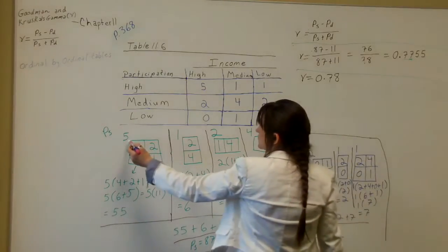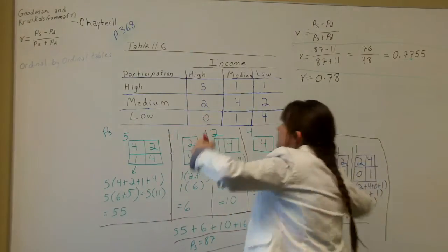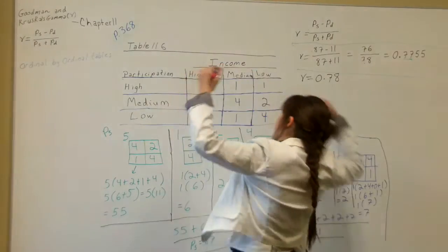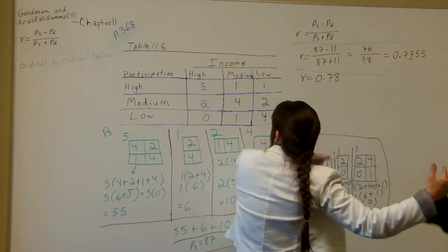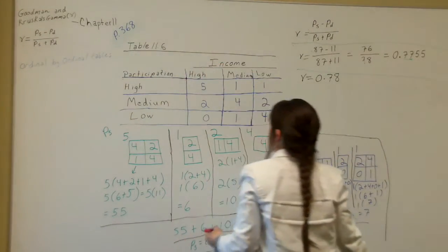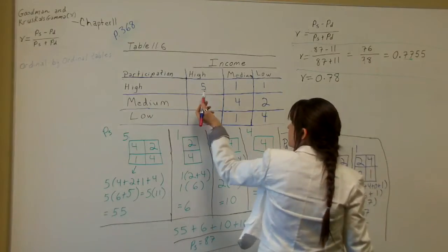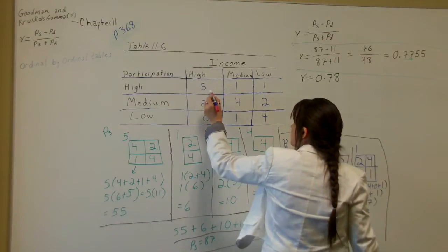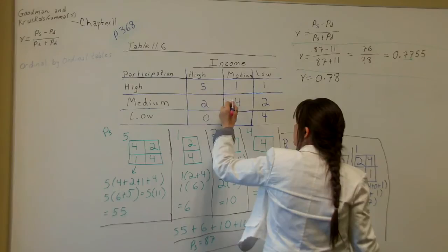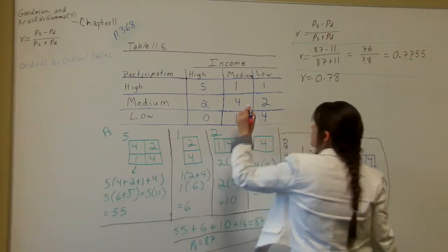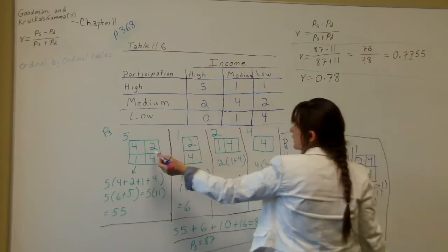For the first one, this 5. For the PS, they're working from the left going diagonal down to the right. So we're working from the 5 on the left. We're going down and to the right. There's a 4. That's where they got the 4. And you work across. There's a 2 to the right of that. That's how they got the 2.